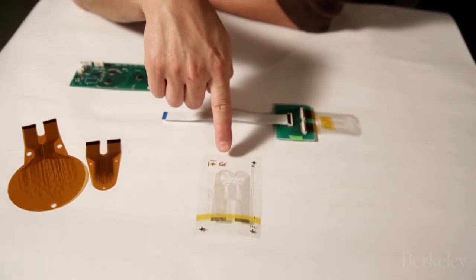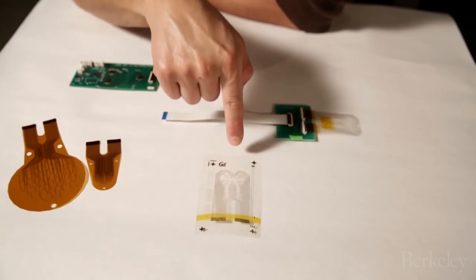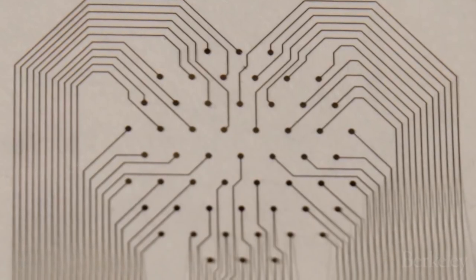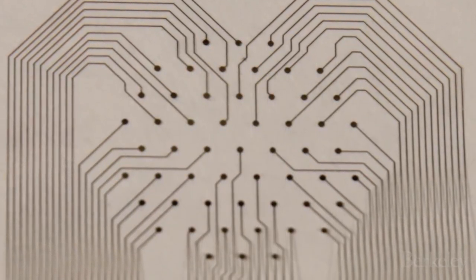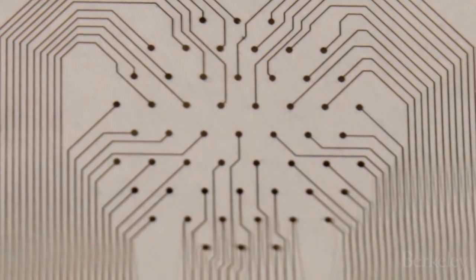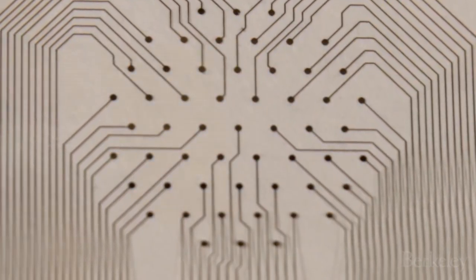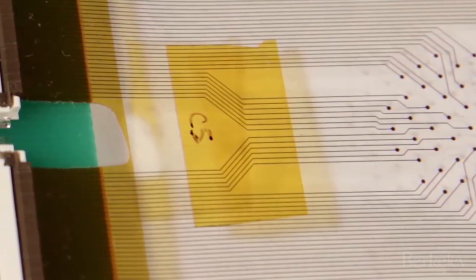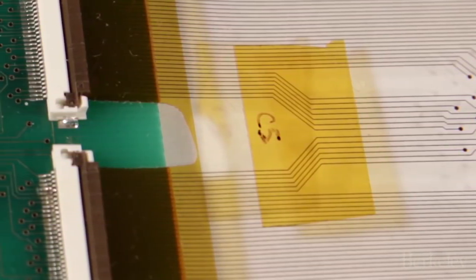This is the electrode array that would go on your skin and be part of the bandage. So what you see here is a bunch of little electrodes. Those are the little dots that you see right in the middle, sort of clustered.